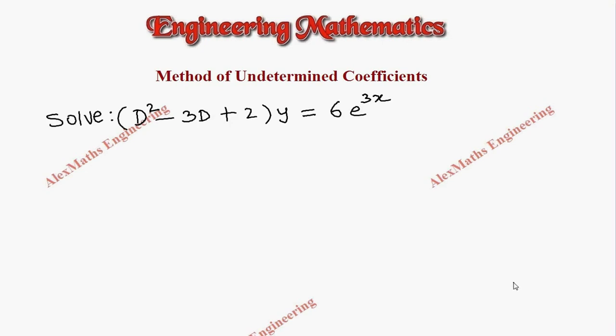Hi students, this is Alex. In this video we are going to solve a differential equation using the method of undetermined coefficients. This equation is y double dash minus 3y dash plus 2y equals 6e^3x.